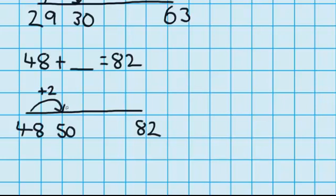From 50, I'm going to jump up to 82. Just like with the last one, because I'm jumping from a tidy number, it's really easy for me to work out that 50 plus 32 equals 82. The answer here is 32. So I jumped up 2, I jumped up another 32, which means in total I jumped up 34.